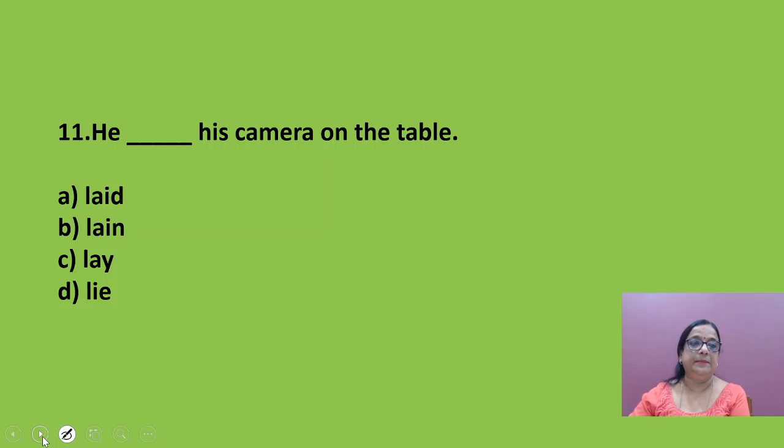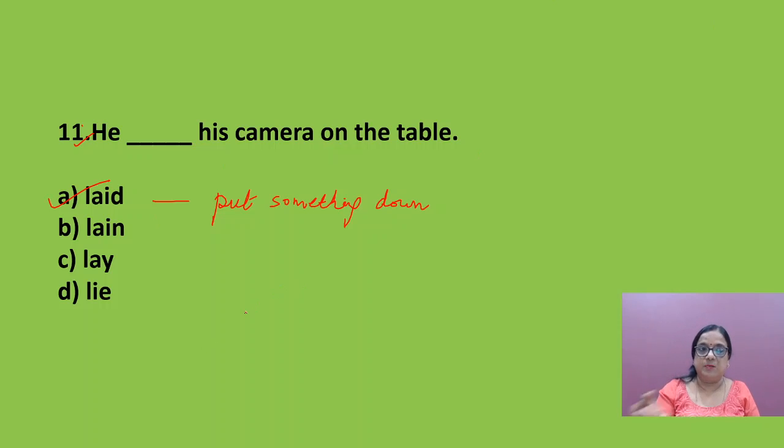He blank his camera on the table. He laid the camera. Laid means what? Put something down. He laid his camera on, that is, he put the camera down. Now, lain is the past participle of laid only. And lay is the main verb. Lay, laid, lain. And lie, of course, is totally different. That is, to lie down means to rest.